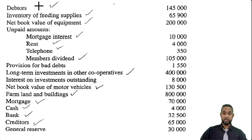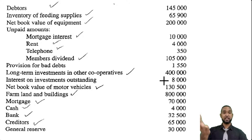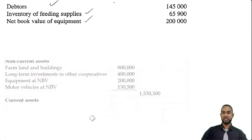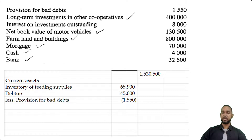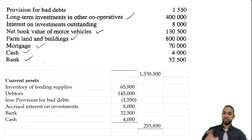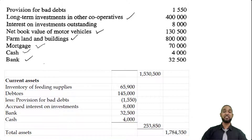Now, current assets. Debtors for sure. Inventory of feeding supplies is stock or inventory — that belongs here. The unpaid amounts are liabilities. Provision for bad debts has to be subtracted from debtors. Interest on investments outstanding — yes, that's like accrued revenue. Cash and bank. So we have the inventory of feeding supplies, the debtors minus the provision, the accrued interest on investments, and bank and cash, giving us a total of $253,850, adding to non-current assets to get a total assets figure of $1.78435 million.